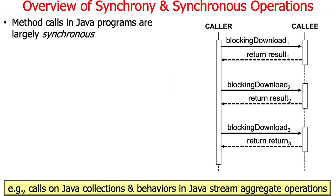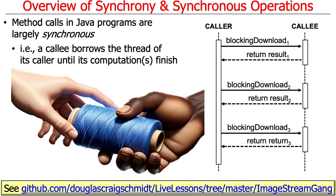Method calls in Java programs, especially the ones that you've been dealing with most of the time you've been programming in Java, and for that matter most of the time you've been programming in general, are largely synchronous. These would include things like calls on Java collections, behaviors in Java stream aggregate operations, unless you do other things that we'll talk about later. What happens here is that the callee, which is the thing that's called, borrows the thread of control from the caller until the callee is finished doing its computation.